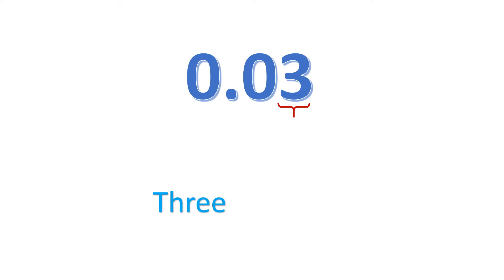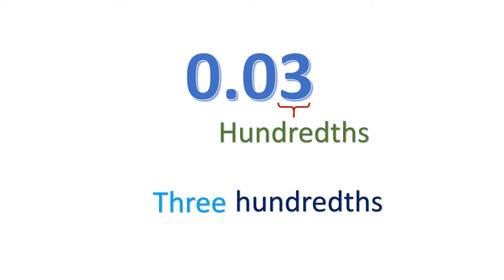Now how about this — we have the same number at the right side of the decimal point, it's still 3, but it is located in a different place value. The number 3 is at the right side of the decimal point, and its place value is the hundredths place, so this is 3 hundredths.